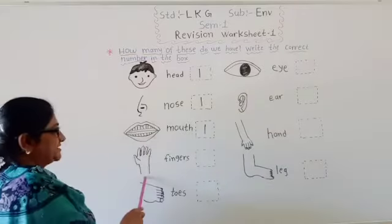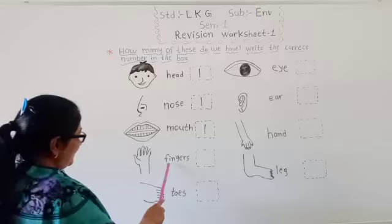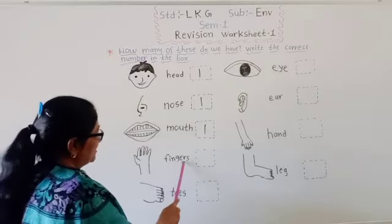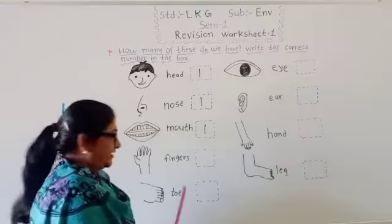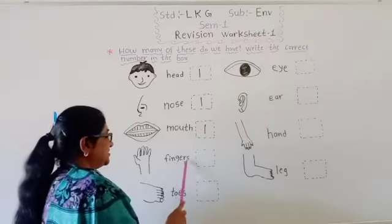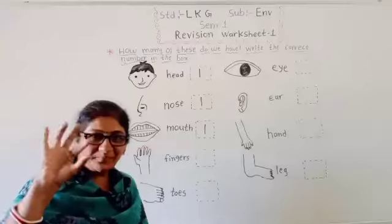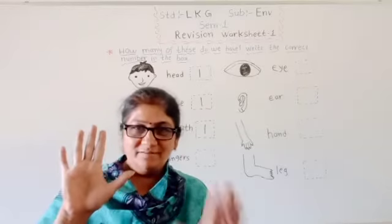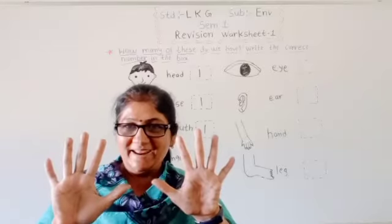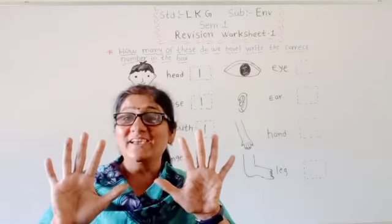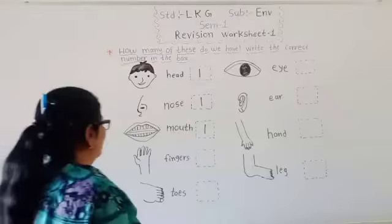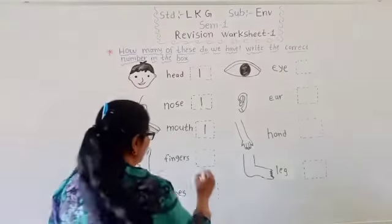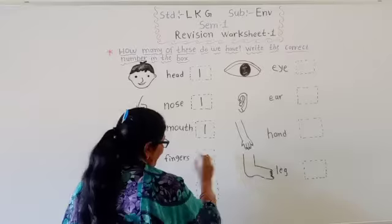Which picture is this? F-I-N-G-E-R-S. Fingers. Humaray hand mein kitnay fingers hootay hai? How many fingers do we have in our hands? Ten. So here, write one zero — ten.